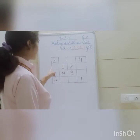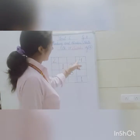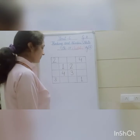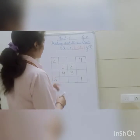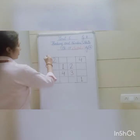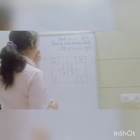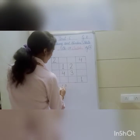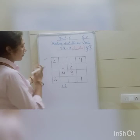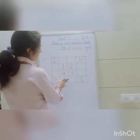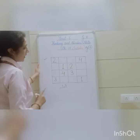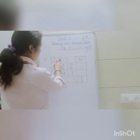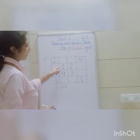In the first row, 2 and 4 are already given. So 1 and 3 we have to fill. We need to fill them such that each number appears only once in this row. If I write 1 here — no, it cannot be, because 1 is already present in this column.